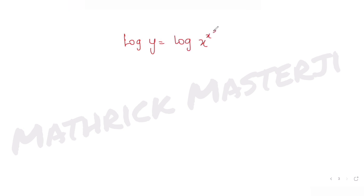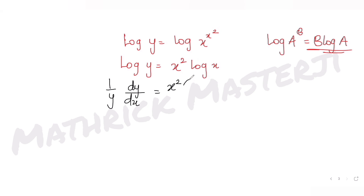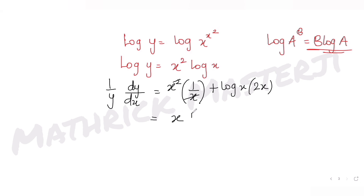Now I take log on both sides: log y = log(x^(x²)). Using the rule log(a^b) = b·log a, I get log y = x² · log x. Differentiating both sides with respect to x, I get (1/y)·(dy/dx) = x² · (1/x) + log x · 2x, using the product rule for u·v.